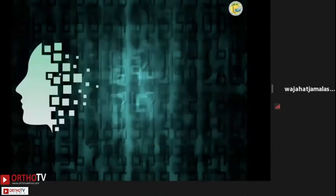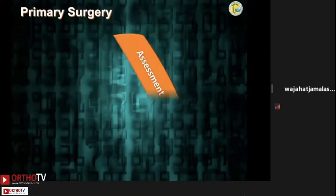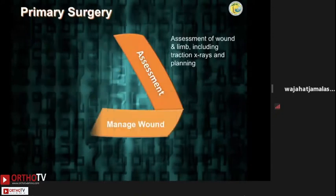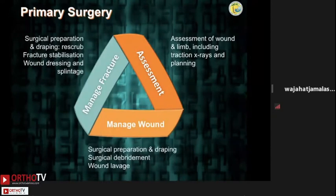Number three: primary surgery and debridement. The objectives of your initial surgical management should be: number one, preservation of life and limb; number two, good surgical wound care and debridement; number three, definitive injury assessment; and number four, fracture stabilization.